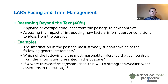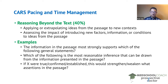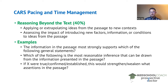For reasoning beyond the text questions, these are characterized by asking you to extrapolate passage information to a new context, or by introducing new information and asking how it impacts the passage. Example stems include: 'The information in the passage most strongly supports which of the following general statements?' and 'Which of the following is the most reasonable inference that can be drawn from the information presented in the passage?' Another common stem is 'If X were true, confirmed, or established, this would strengthen or weaken what assertions in the passage?'